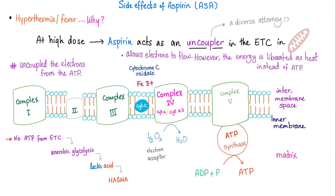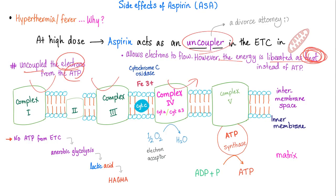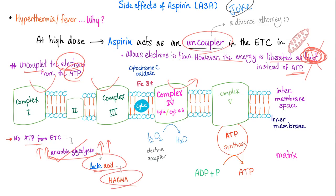Side effects of aspirin: hyperthermia or fever. Why? Aspirin is an uncoupler — it uncouples the electrons from the ATP synthesis, allowing electrons to flow, but the energy is liberated as heat instead of ATP, which is very inefficient. When you have no ATP coming from the electron transport chain, you shift to anaerobic glycolysis, which leads to lactic acid, which leads to high anion gap metabolic acidosis — HAGMA.